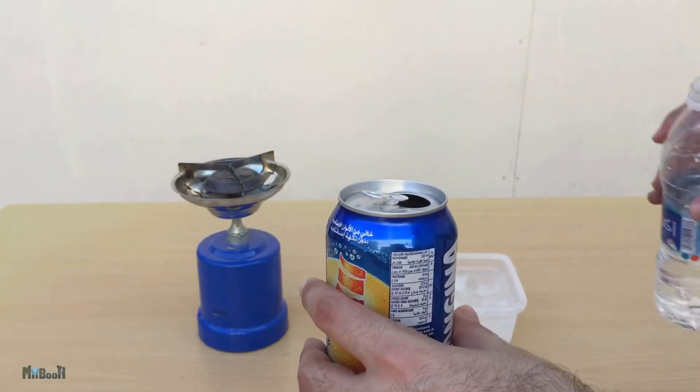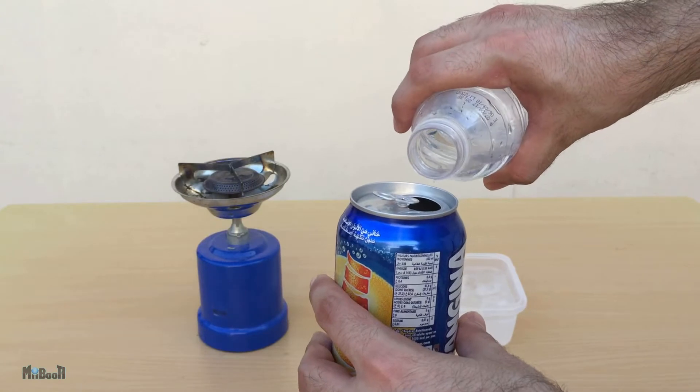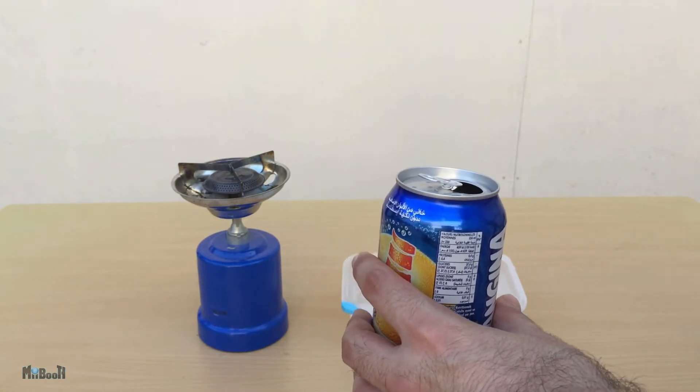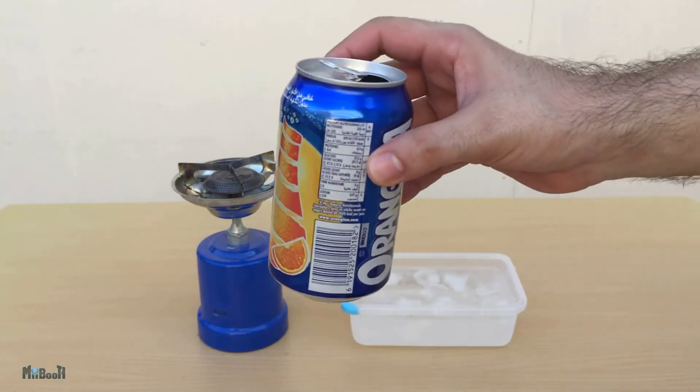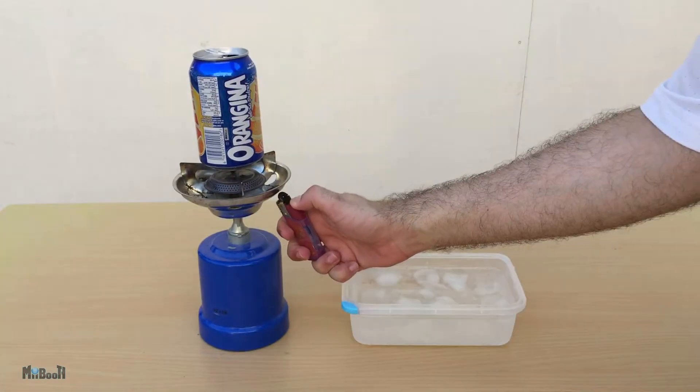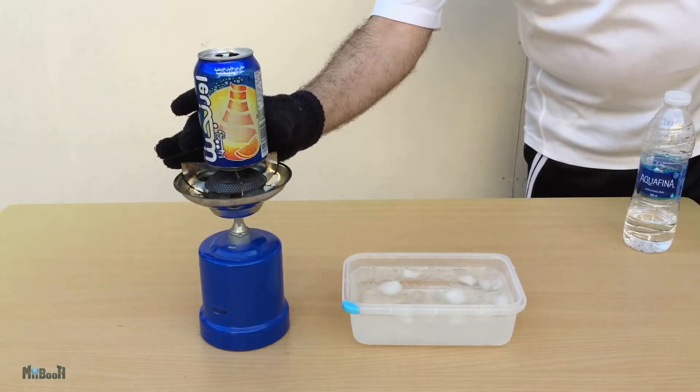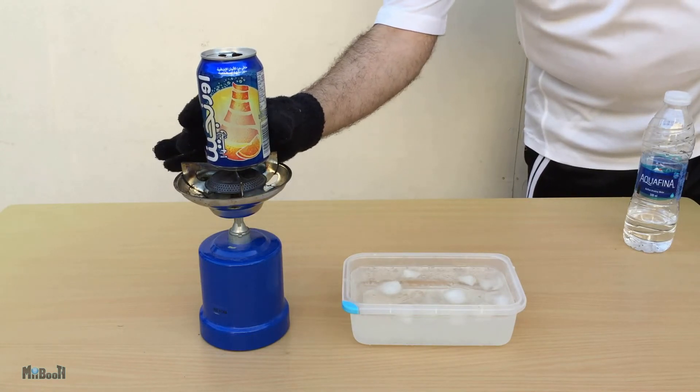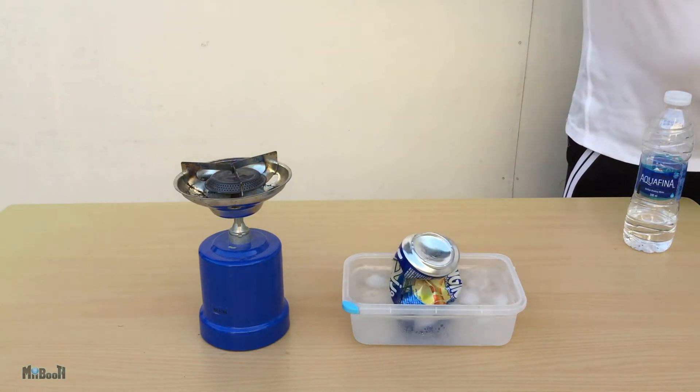Number 1. You can be surprised what a little bit of water and an empty aluminum can is capable of. I'm going to pour in a little bit of water into the can and then place it on a stove. When vapour starts to rise from the opening, I'm going to turn off the heat, lift the can and turn it upside down into an ice water bath.